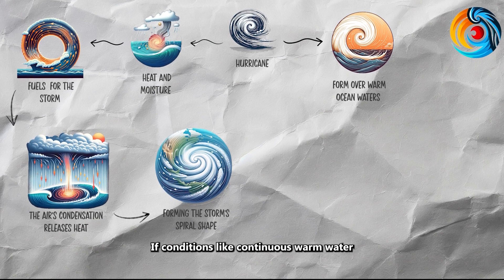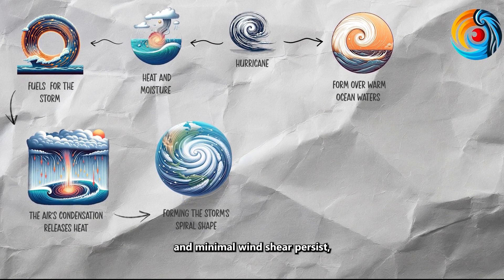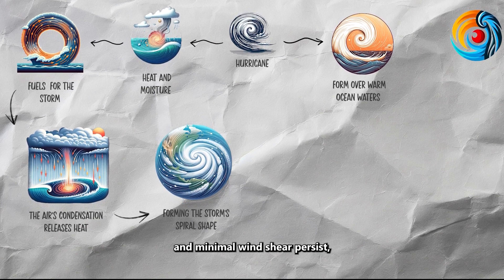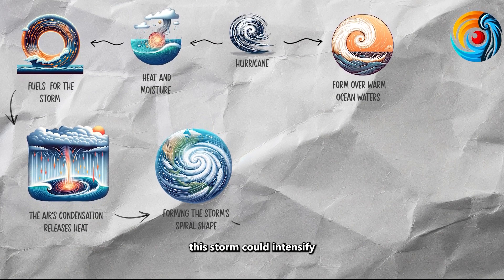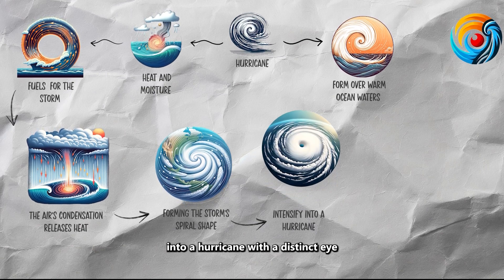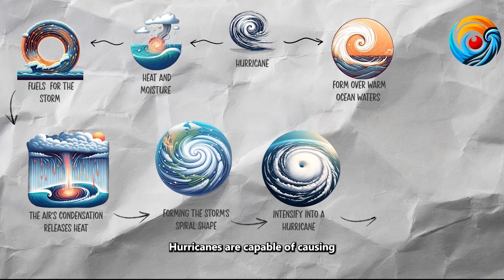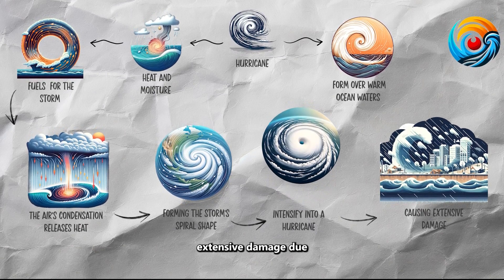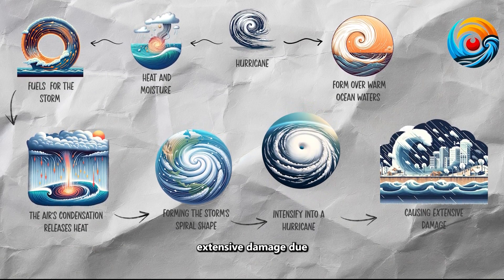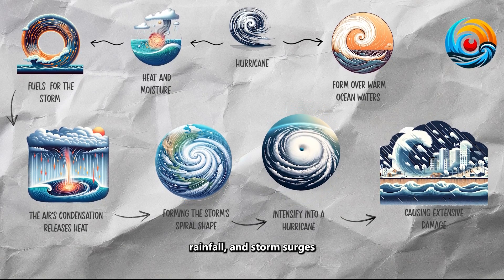If conditions like continuous warm water and minimal wind shear persist, the storm can intensify into a hurricane with a distinct eye. Hurricanes are capable of causing extensive damage due to high winds, heavy rainfall, and storm surges.